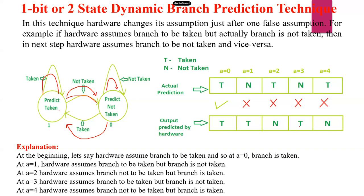So this is also an incorrect assumption — 0 to 1. Next time my prediction is taken, but actual prediction is not taken. So the control will be transferred from 1 to 0 — the prediction is false. Vice versa, 1 to 0. Hardware prediction is 0, actual prediction is taken — again false. So the control will be transferred to 1. Here we have only two states, so there are still many disadvantages. That is why we move on to the four-state algorithm.